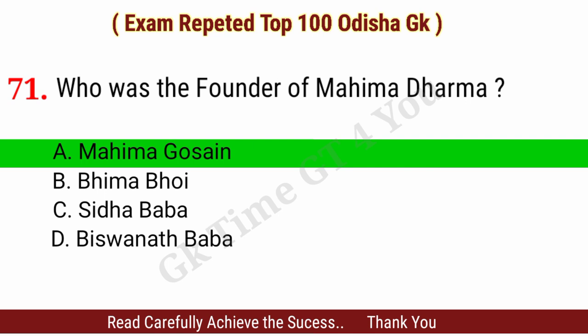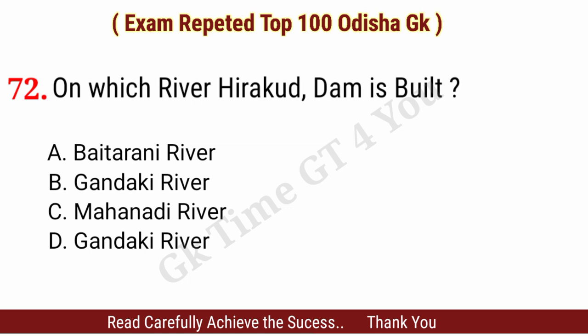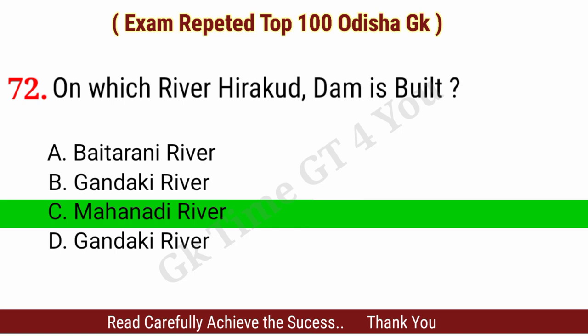Question number seventy-two: On which river was the Hirakud Dam built? Right answer, option C: Mahanadi River.